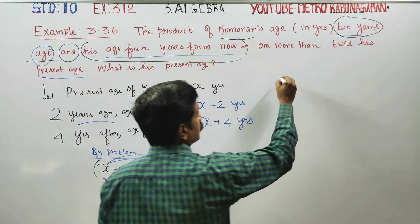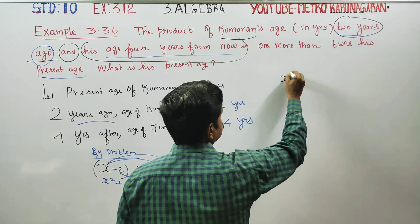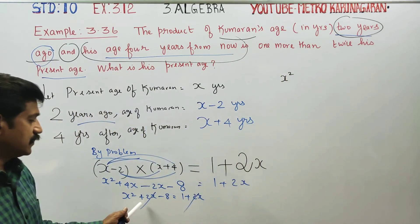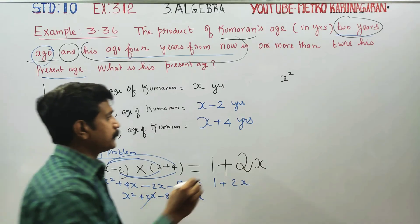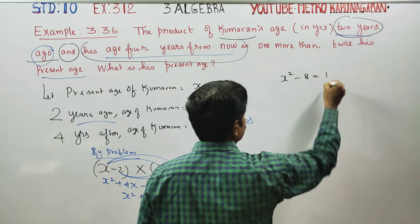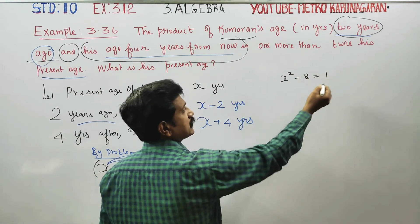The 2x terms cancel on both sides, leaving x squared minus 8 equals 1.